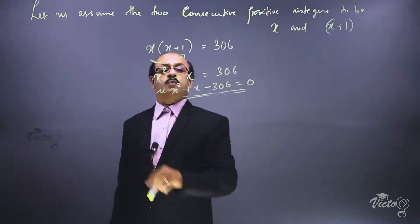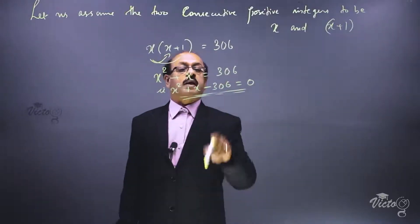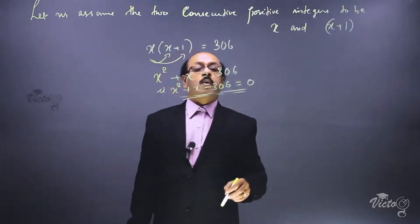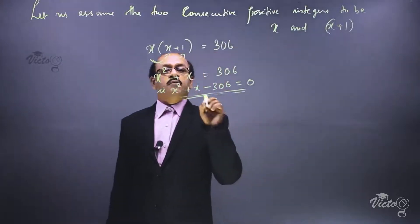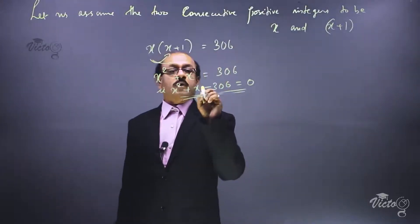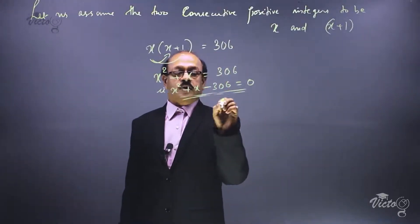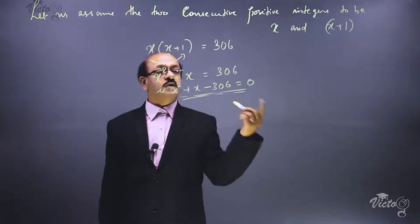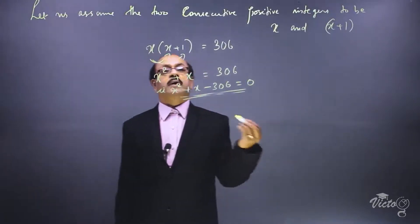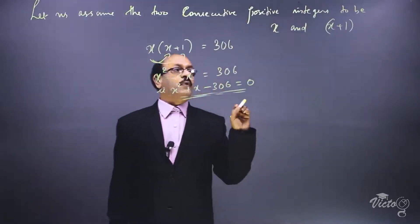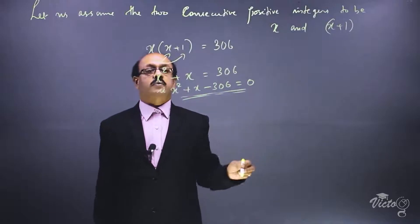This is in the standard form ax square plus bx plus c equal to 0. Here a is equal to 1, b is equal to 1, and c is equal to minus 306. We will stop here for now and in the next topic we will solve this equation to find the value of x, that is the integers x and x plus 1.